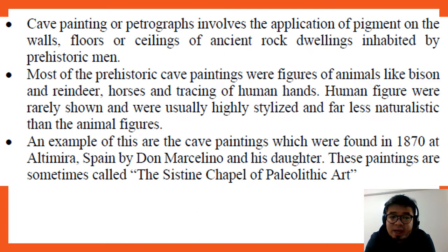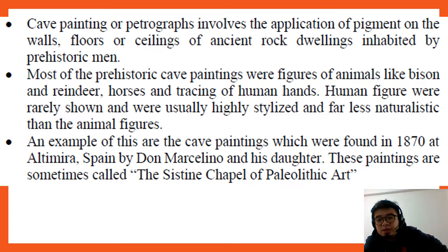Human figures were rarely shown and were usually highly stylized and far less naturalistic than the animal figures. An example of this is the cave paintings found in 1870 at Altamira, Spain, by Don Marcelino and his daughter.